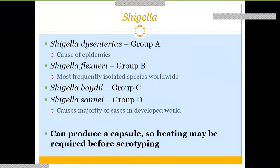Shigella has different groups, A through D. Group A is Shigella dysenteriae, a major cause of dysentery epidemics. Shigella is commonly associated with food poisoning causing dysentery or diarrhea. Group B is Shigella flexneri — the most common worldwide. Group C is Shigella boydii. Group D is Shigella sonnei, which is the most commonly seen in developed countries like the United States.